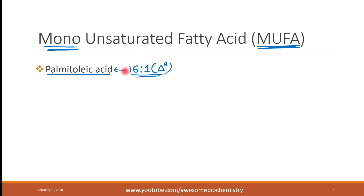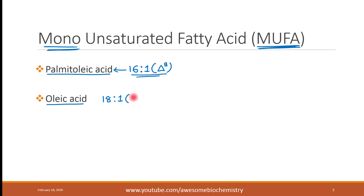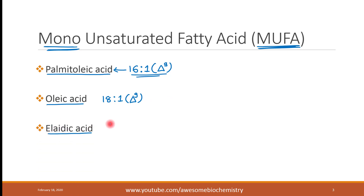The second example is oleic acid. This is an 18-carbon long compound with one double bond, written as 18:1. The location of the double bond is again between the 9th and 10th carbon from the carboxylic group side, so we write delta 9. The third example is elaidic acid, which is also an 18-carbon compound having one double bond at delta 9.